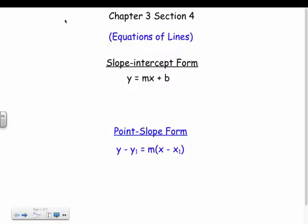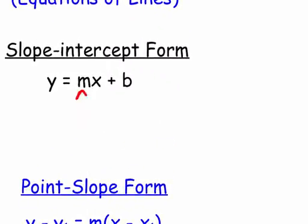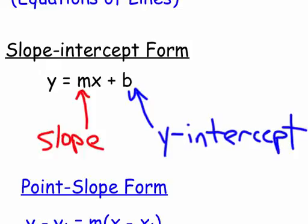In slope-intercept form, the x and y stand for any point on my graph — any xy point. The m stands for slope, which we've already covered, and the b stands for the y-intercept — hence the name slope-intercept form, because it contains the slope and the y-intercept.